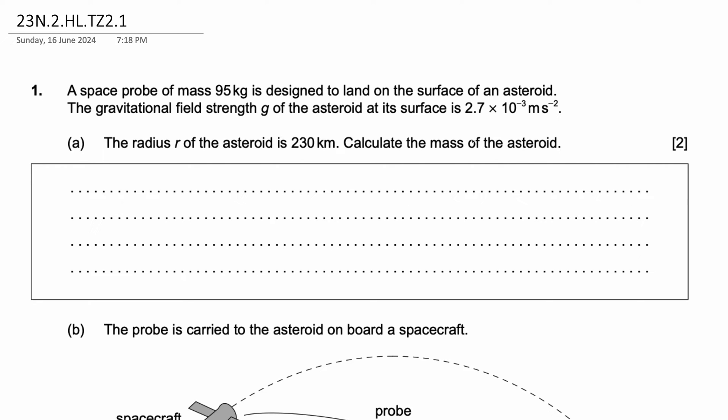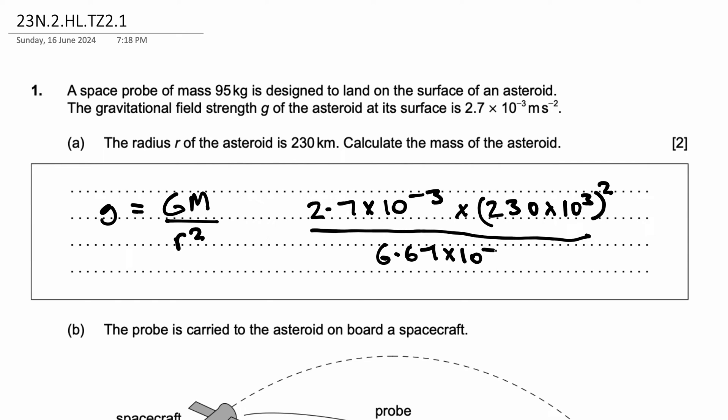In your formula booklets, there is an equation g = GM/r². This is the equation for the gravitational field strength. We can use this equation because we have everything necessary. This will help us solve for m. We know g, the gravitational field strength, is 2.7 × 10^-3. We know the radius must be converted into meters. So, 230 × 10³ whole square—I'm converting it to meters—divided by the gravitational constant, which is 6.67 × 10^-11. This value is given in your data booklet. This is equal to mass.